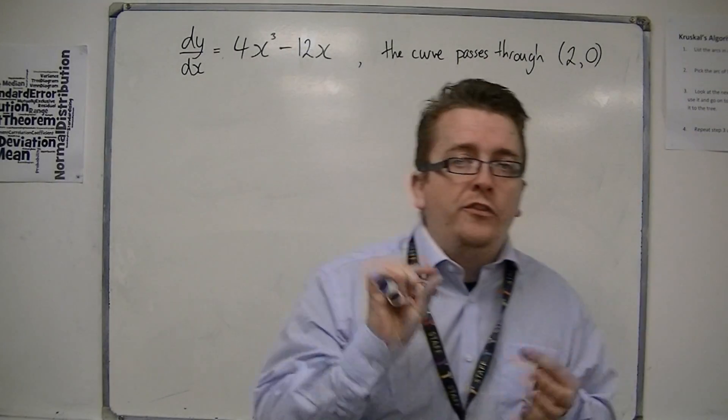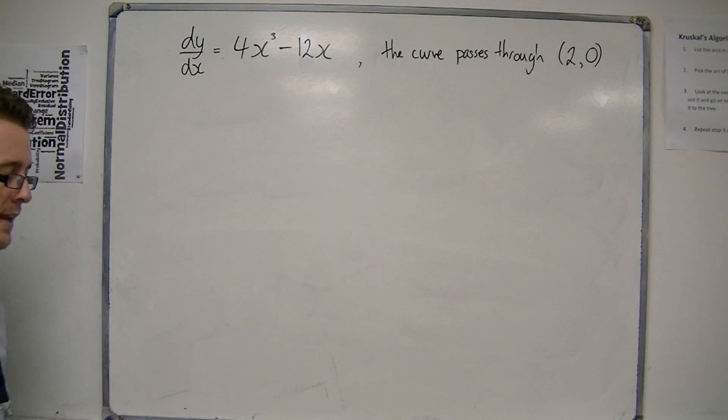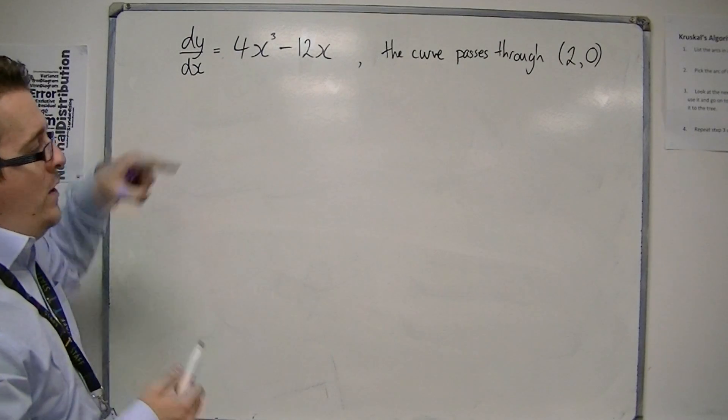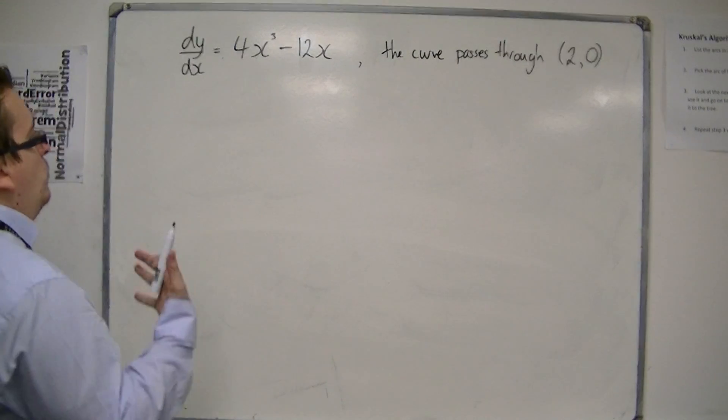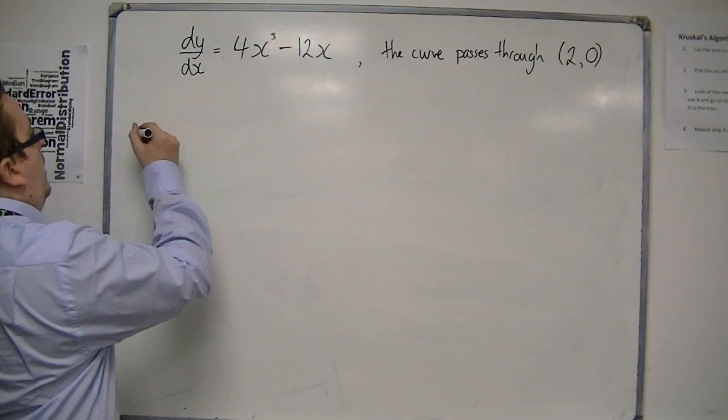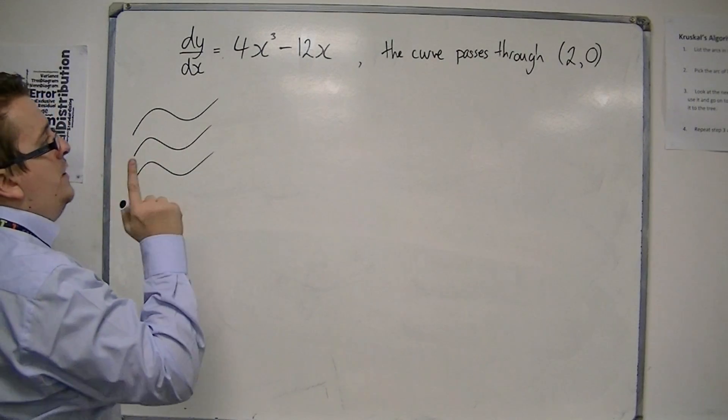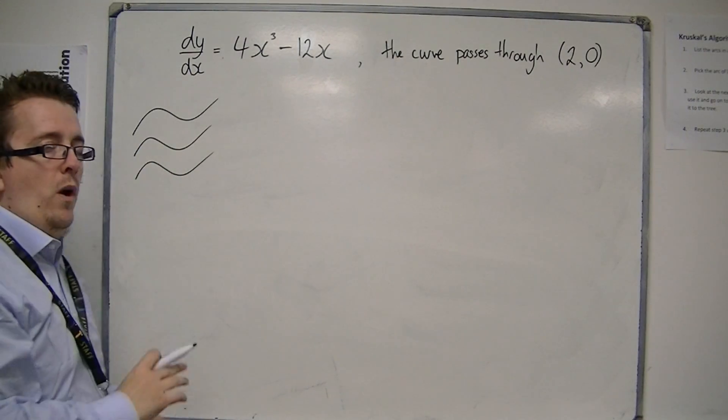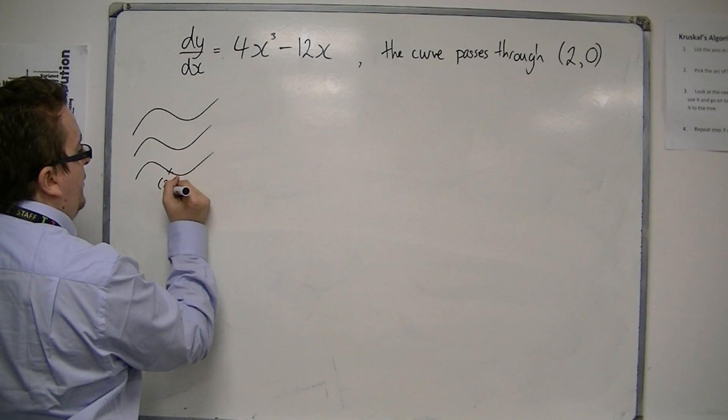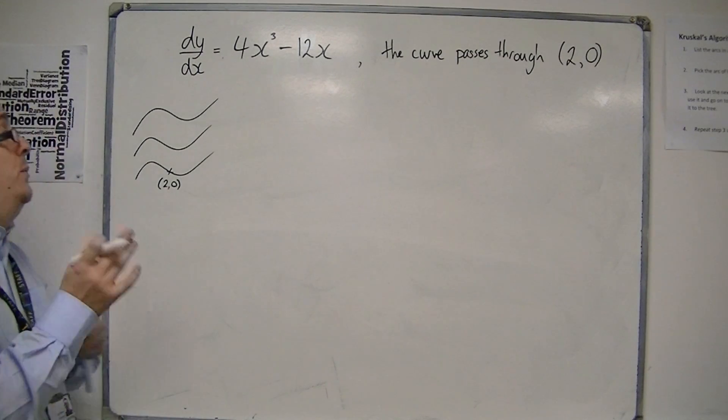And we're told the curve specifically passes through the point (2,0). What I did in the first video was I introduced this idea that when we find y, we're finding a general solution. We're actually finding a whole family of curves, and it is the value of c that determines which one we're actually looking for. Only one of these will go precisely through the point (2,0), and we need to determine the value of c that will allow us to do that.